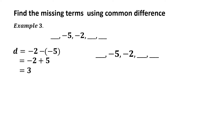Now we will find the missing terms. Remember: to find missing terms to the right, add the common difference; to the left, subtract. To the right: negative 2 plus 3 equals 1, then 1 plus 3 equals 4. Now to the left: negative 5 minus 3 equals negative 8. Therefore, the arithmetic sequence is negative 8, negative 5, negative 2, 1, and 4.